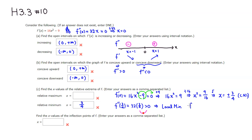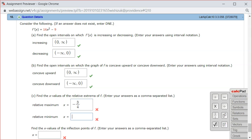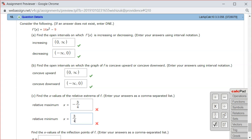Looking at f double prime of negative 3/4: 32 times negative 3/4 is negative. Since the second derivative is negative, you're at the top of the hill, so it's a local maximum at x equals negative 3/4. Let's type it in: relative maximum at x equals negative 3/4, and relative minimum at x equals positive 3/4. Let's check the answer.